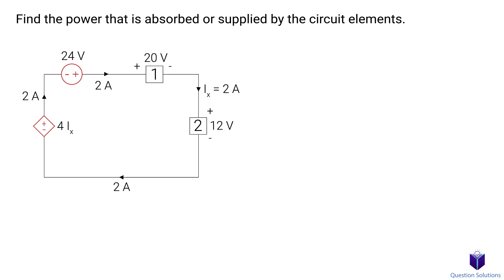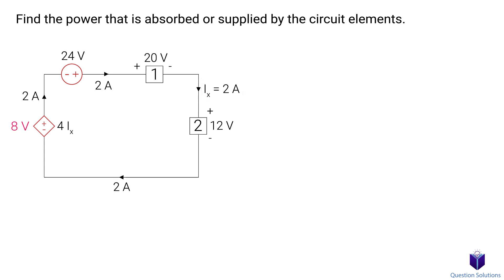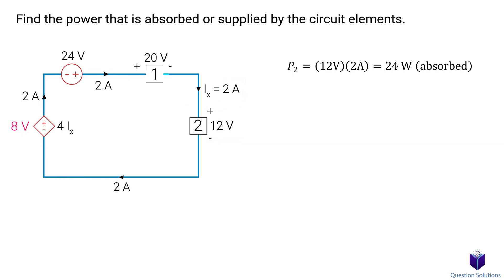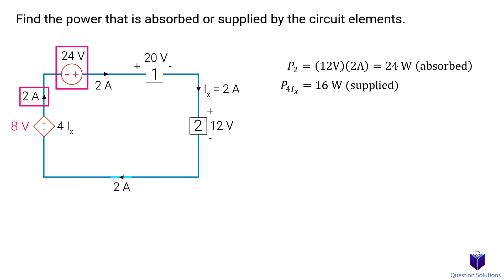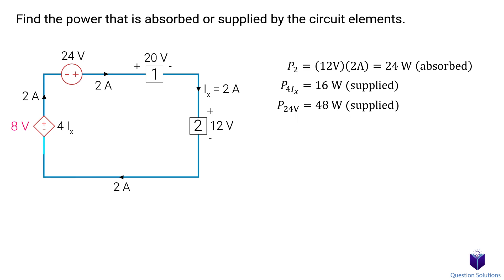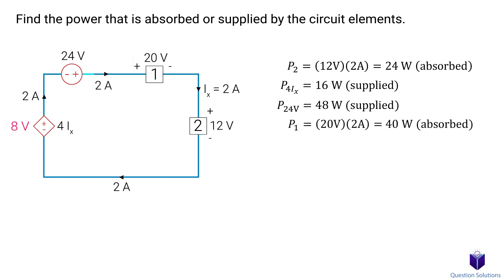In this circuit we have a dependent voltage source labeled 4ix, meaning its voltage depends on the current ix. Since ix = 2 amps, the voltage here is 8 volts. For element 2: current enters the positive terminal, so 12 × 2 = 24 watts absorbed. For the dependent voltage source: current enters the negative terminal, so −8 × 2 = −16 watts supplied. Another voltage source has current entering its negative terminal: −24 × 2 = −48 watts supplied. Element 1 has current entering the positive terminal: 20 × 2 = 40 watts absorbed.